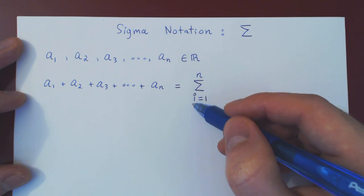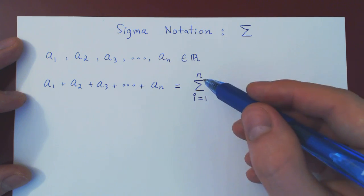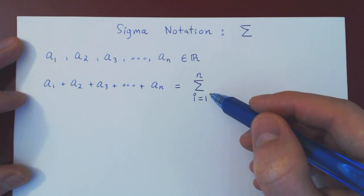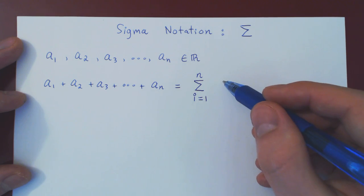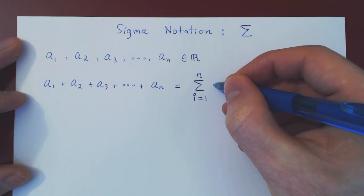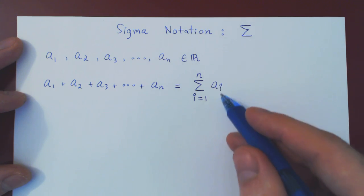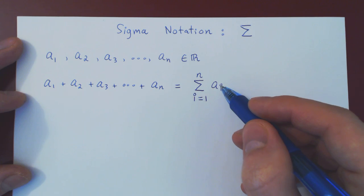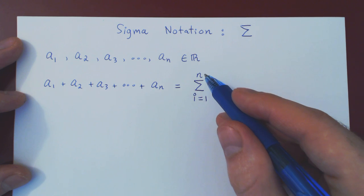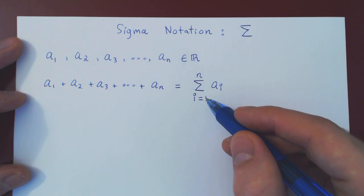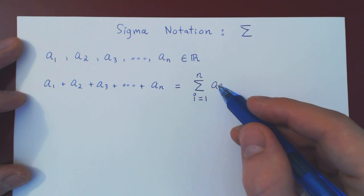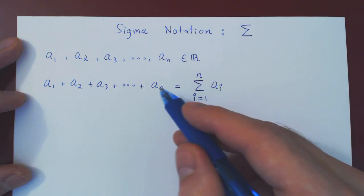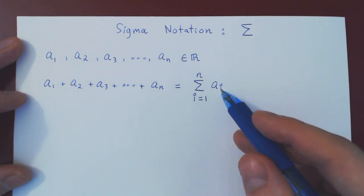So what this means is: as i goes from 1 to n (i being an integer going 1, 2, 3, 4, up to n), we sum what's out front — namely aᵢ. Going backwards: we are summing aᵢ where i begins at 1 and goes up to n, giving us a₁ + a₂ + a₃ + ⋯ + aₙ. And that's sigma notation.